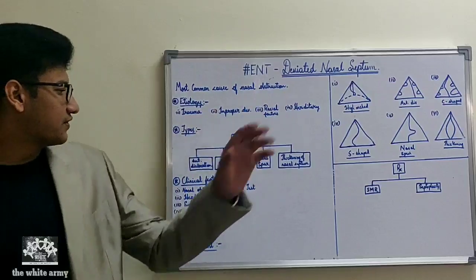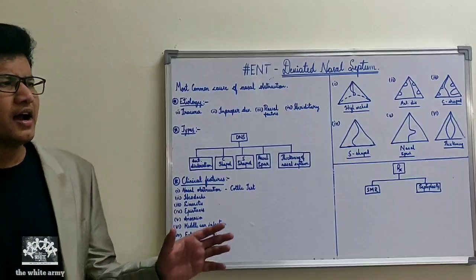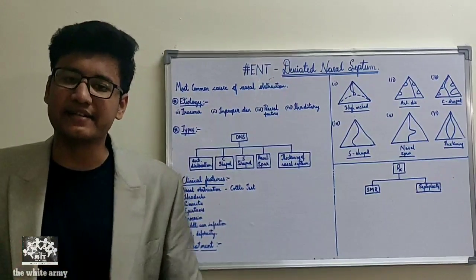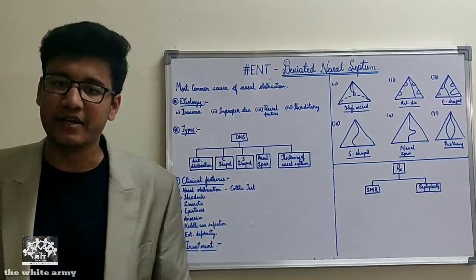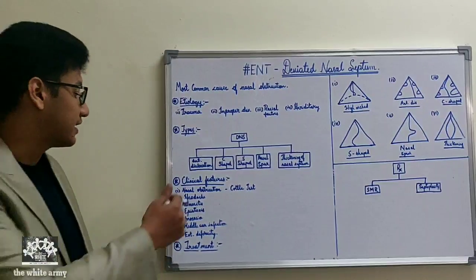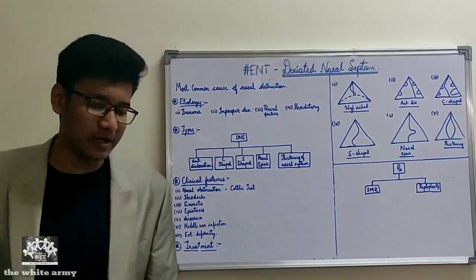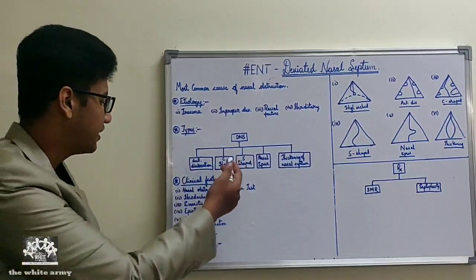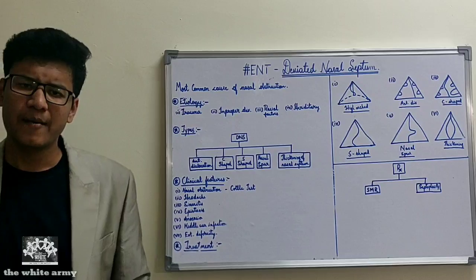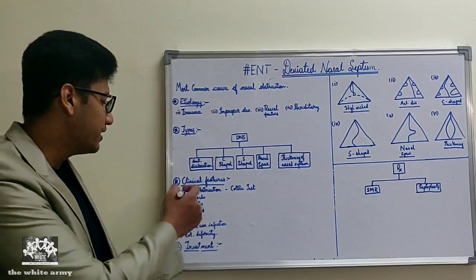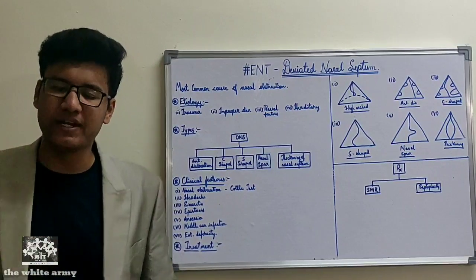Not all cases of deviated nasal septum are treated — only those that show clinical features are treated, either surgically or conservatively. Regarding nasal obstruction, C-shaped DNS causes unilateral nasal obstruction while S-shaped causes bilateral nasal obstruction.